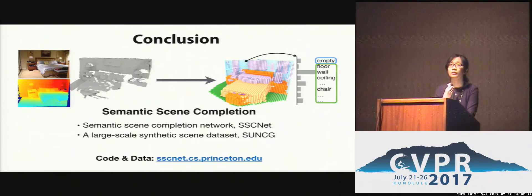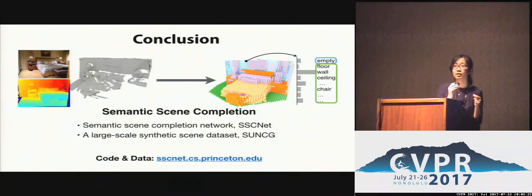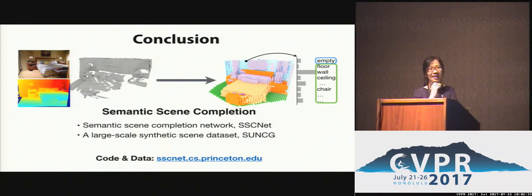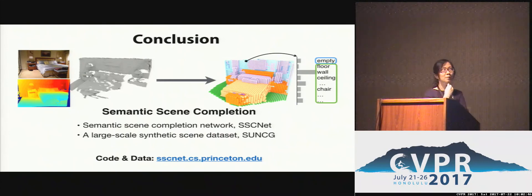Question: How would your approach extend when you have both known and unknown objects in the scene? Answer: That's a good question, and it's a general challenge for tasks like object detection — how you extend to unknown classes. Currently, we don't consider unknown classes. The training data covers objects you can typically see in indoor environments, and handling unknown object classes remains an open problem.